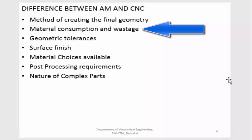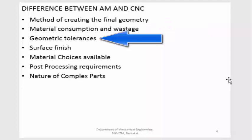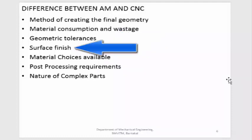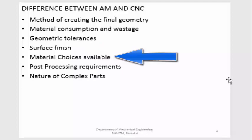Generally speaking, material consumption is much less in additive manufacturing compared to CNC. If you are looking for an environmentally friendly process, additive manufacturing is more environmentally friendly because it consumes fewer resources. The next difference is geometric tolerances — additive manufacturing tolerances are higher, meaning less precise, whereas CNC machining can achieve very close tolerances. Surface finish from CNC machines is also much better compared to additive manufacturing, because building layer by layer produces a staircase effect with distinct steps on the surface.